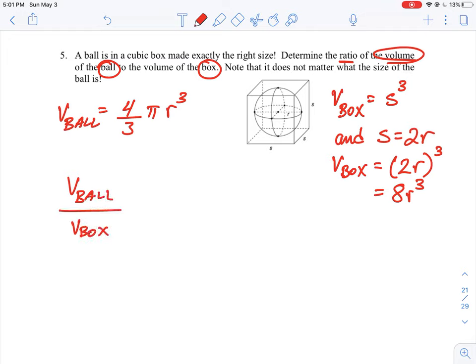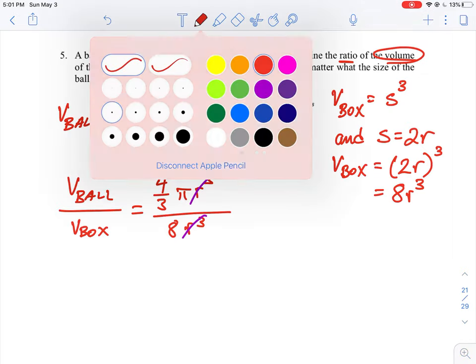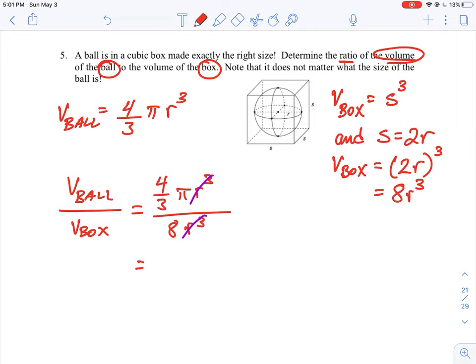We're actually asked to find the ratio of the ball divided by the ratio of the box, so it's just going to end up being a number. We know the expression for the ball: four-thirds pi r cubed. And we're going to divide that by the volume of the box, which we know is eight r cubed. Now because both of these expressions have a common term of r cubed in them, that actually will cancel.